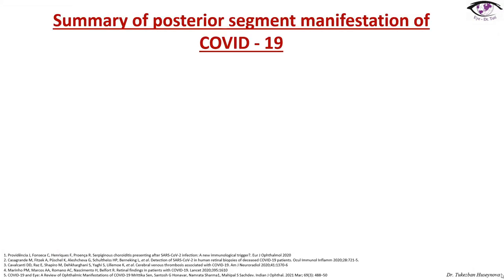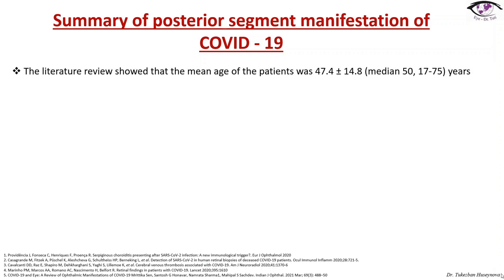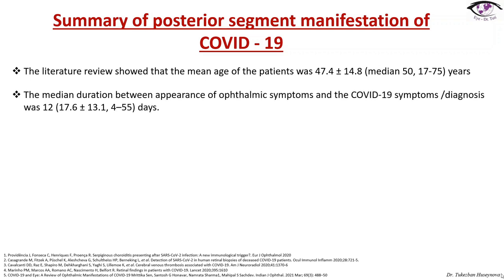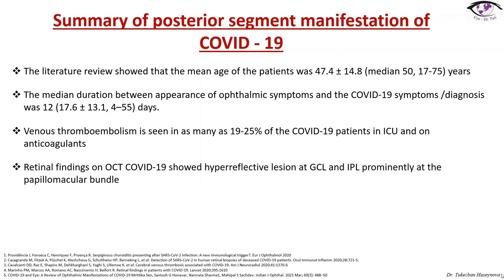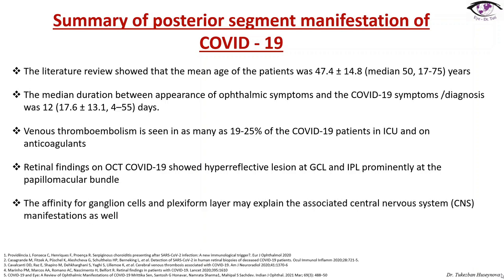Summary of posterior segment manifestations of COVID-19: the mean age of patients was 47 years (±14 years). The mean duration between appearance of ophthalmic symptoms and COVID-19 symptoms or diagnosis was 12 days. Venous thromboembolism is seen in as many as 19–25% of COVID-19 patients in the ICU on anticoagulants. Retinal findings on OCT showed hyperreflective lesions at the ganglion cell layer and inner plexiform layer, prominently at the papillomacular bundle. The affinity for ganglion cells and the plexiform layer may also explain associated central nervous system manifestations.